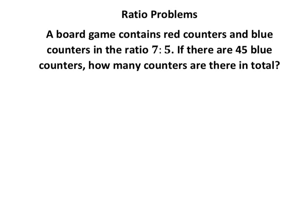We're looking at ratio word problems. Set them out carefully. We've got red and blue counters - always have a total column. The ratio is in the same order as the words, so red comes first. Red is 7, the total is 12. It says there are 45 blue counters.